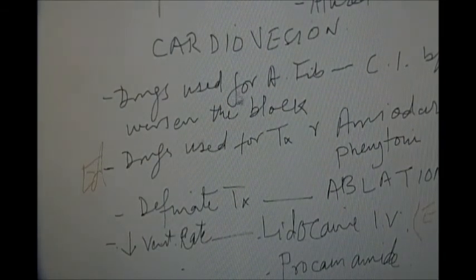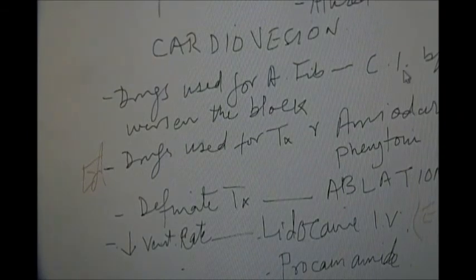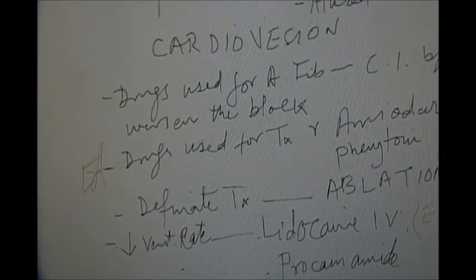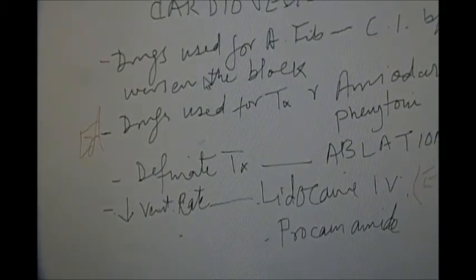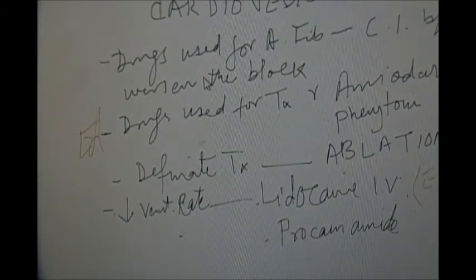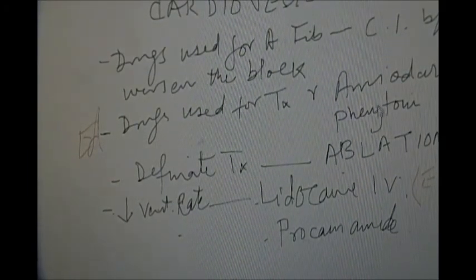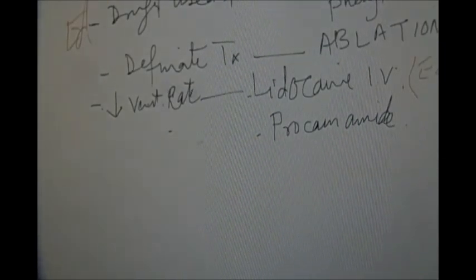The drugs used for atrial fibrillation are contraindicated because they may worsen the block. The drugs used for treatment are amiodarone and phenytoin. The definitive treatment is ablation.